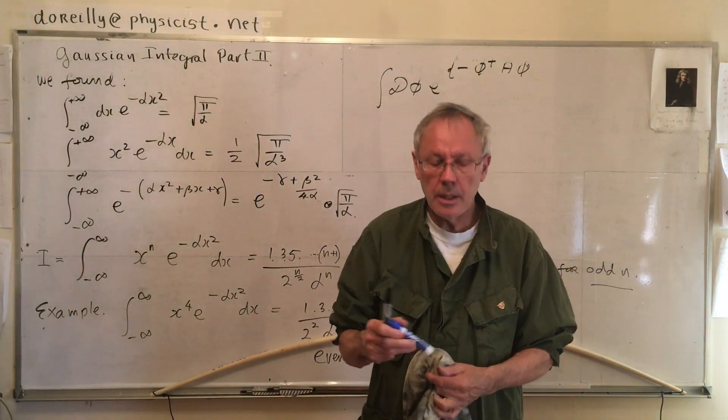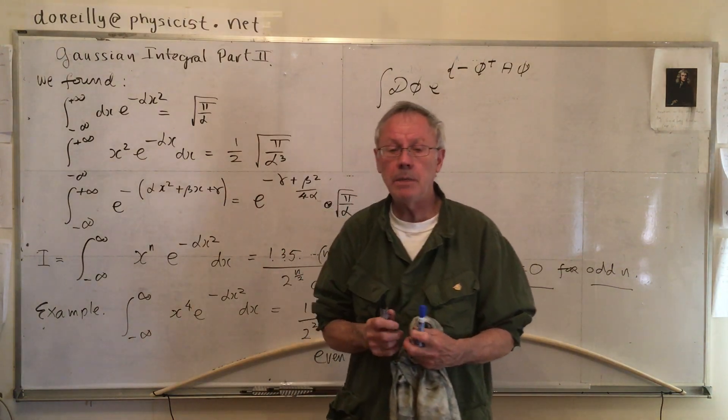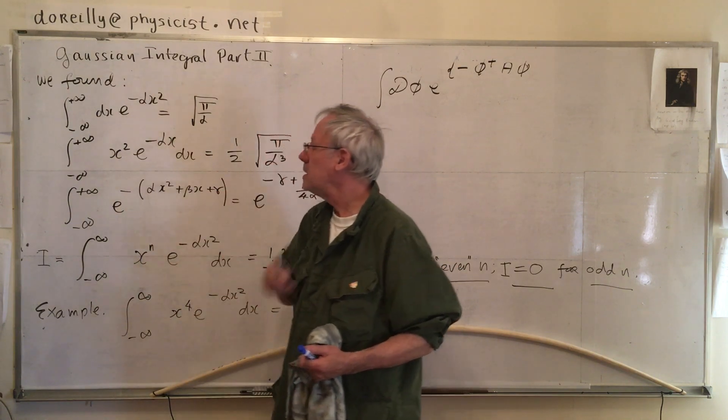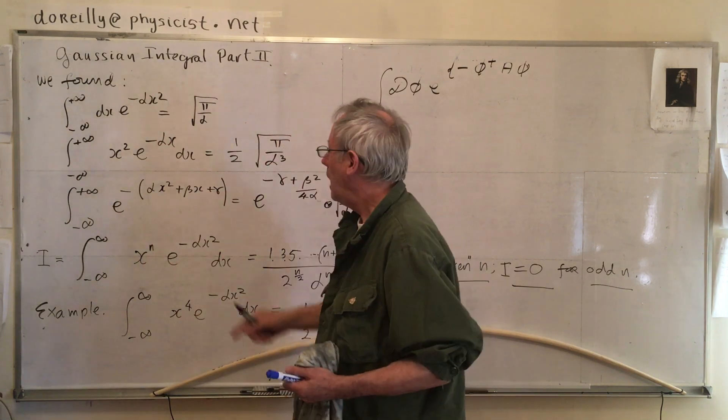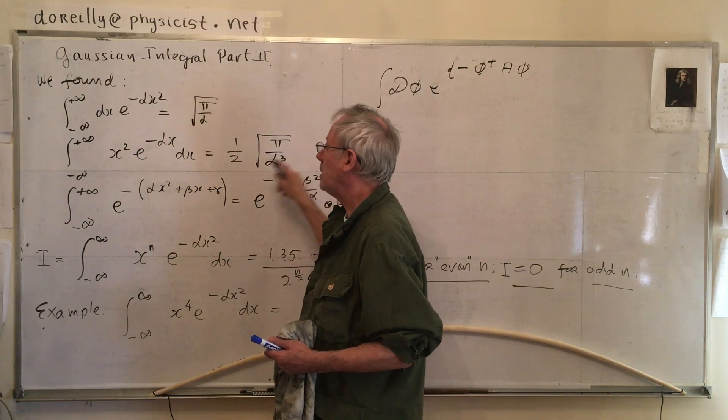Good morning. So this is part two of the Gaussian integral. We did part one where we evaluated the Gaussian integral in simple form. And we also took derivatives of it to get a result that looks like this.